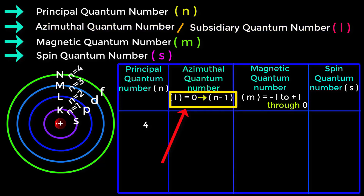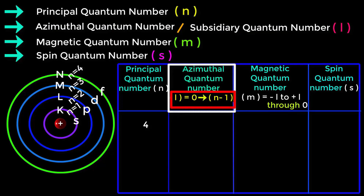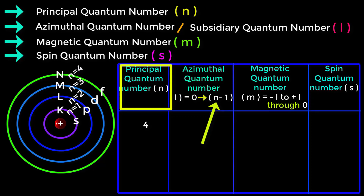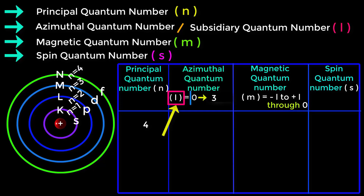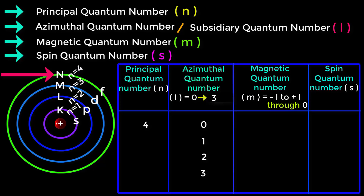Now we will learn the calculation process of azimuthal quantum number. Azimuthal quantum number L equals 0 to N minus 1, where N means principal quantum number. We already have N equals 4, so L equals 0 to (4 minus 1), that is 0 to 3. From zero to three we get the numbers 0, 1, 2, and 3. Therefore for the N shell, the values from 0 to 3 will be the values of the azimuthal quantum number L.